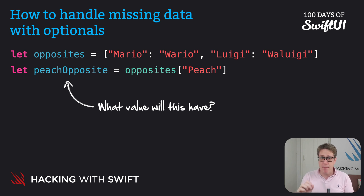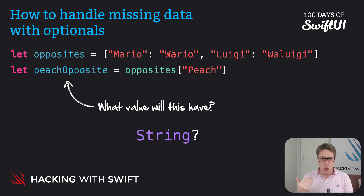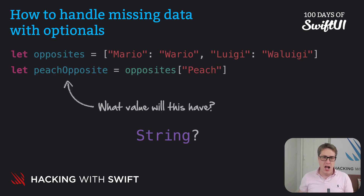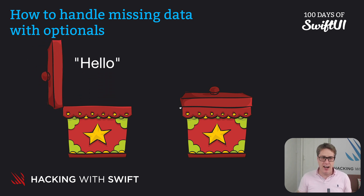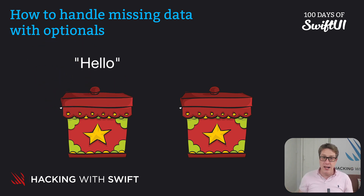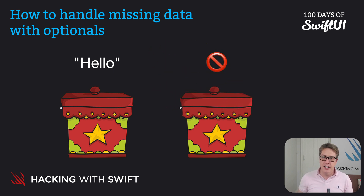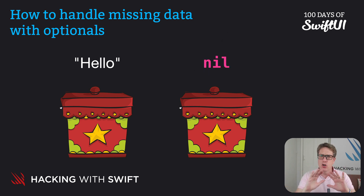Swift's solution for this is called optionals — data that might be present but might not be present — and they are primarily represented by putting a question mark after a type. So in this case, peach's opposite will be a String? — might be a string, might not be. Optionals effectively work like a box: there might be something inside the box. We can open the box, look inside, and find a string waiting for us — or find there's nothing at all, a special value Swift calls nil. That means nothing, no value.